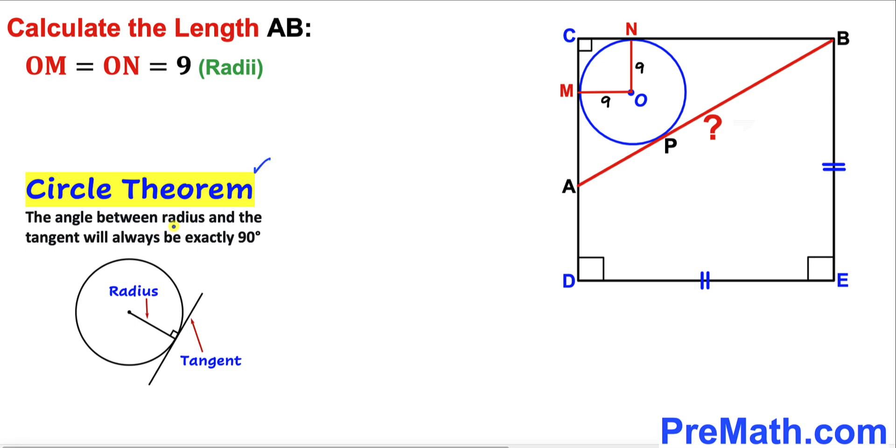Now let's recall the circle theorem: the angle between radius and the tangent will always be 90 degrees. Therefore, in our case this line is a tangent and this is a radius, so the angle between them is 90 degrees.